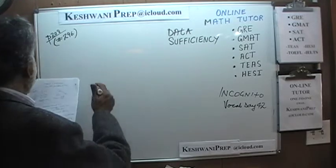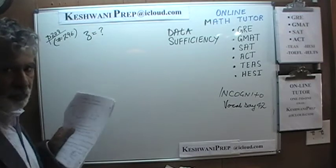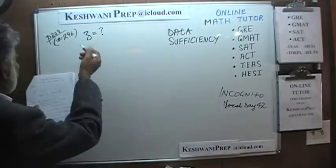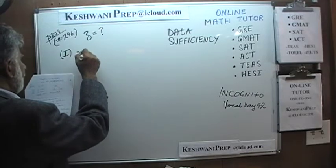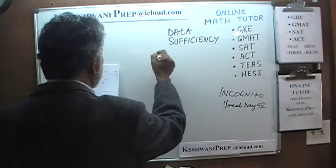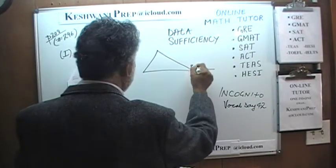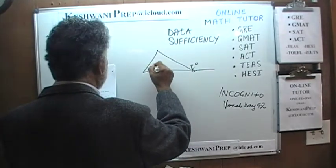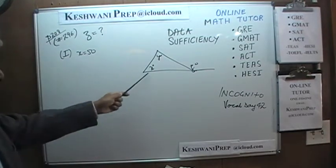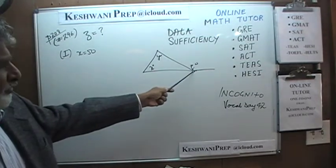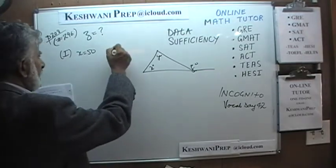Number 296 is a very straightforward, simple problem. The question is: how much is Z? In the first statement they tell us that X is equal to 50, and what they give us is a triangle with Z, X, and Y. Simply knowing X does not enable us to know what Z is — we also need to know Y. We don't know Y at this point, so the first statement by itself is not enough.